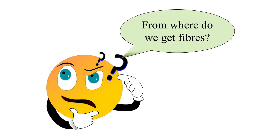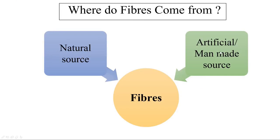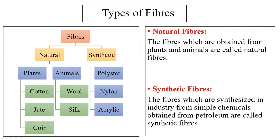We get fibers from two sources: natural sources and artificial or man-made sources. Fibers obtained from plants and animals are called natural fibers — for example, from plants we get cotton, jute, and coir; coir is obtained from coconut husk. From animals we get wool and silk. Fibers synthesized in industry from chemicals obtained from petroleum are called synthetic fibers — for example, polyester, nylon, and acrylic.